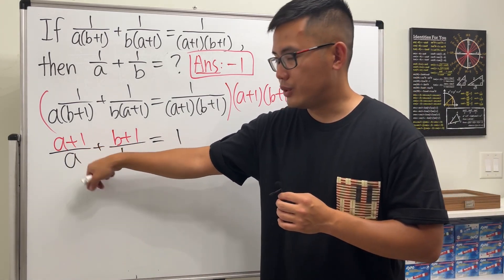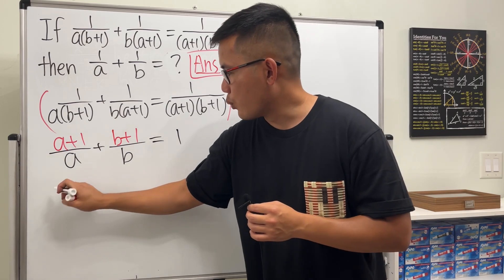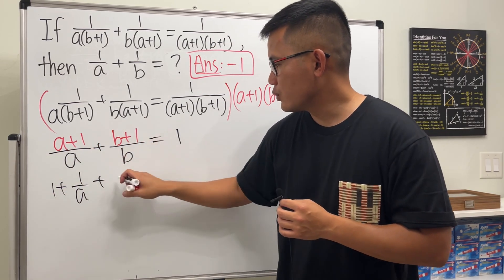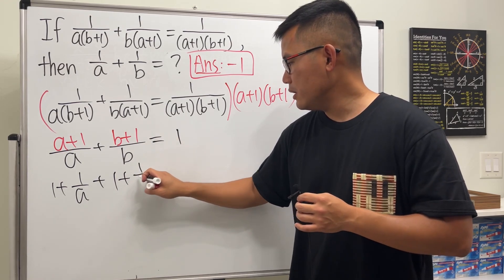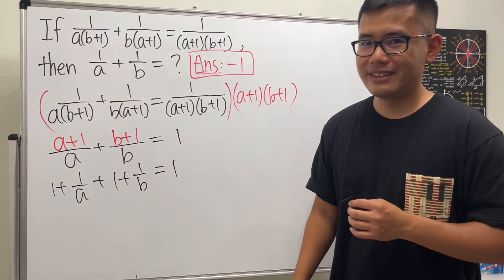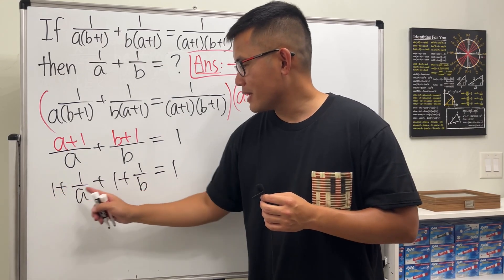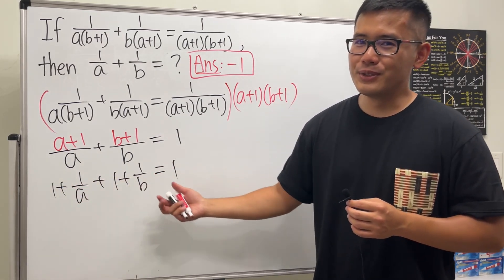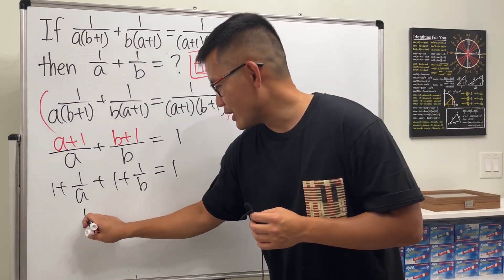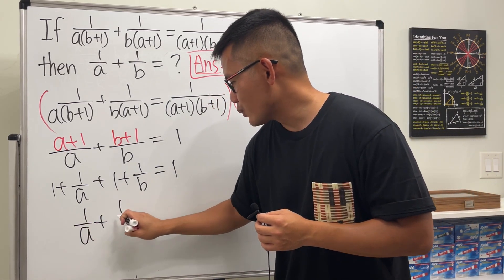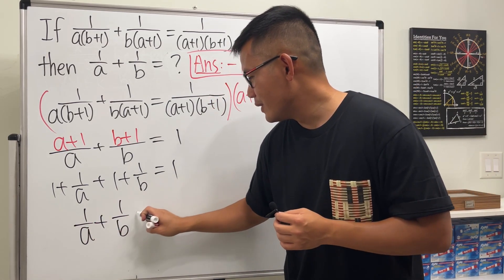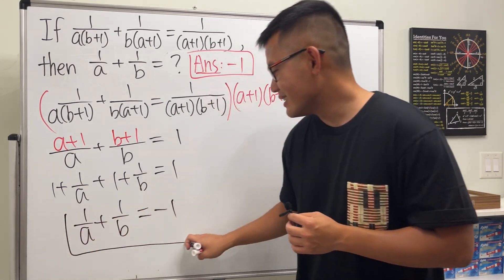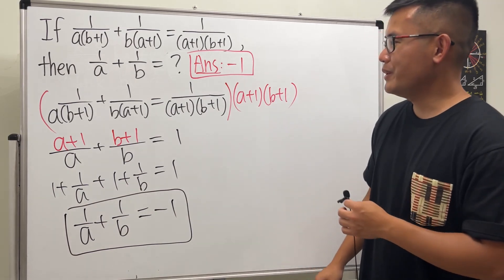We can reduce: (a+1)/a gives 1 + 1/a, and (b+1)/b gives 1 + 1/b, and this equals 1. So 1 + 1/a + 1 + 1/b = 1, which means 1/a + 1/b = 1 − 2 = negative one, and we are done.